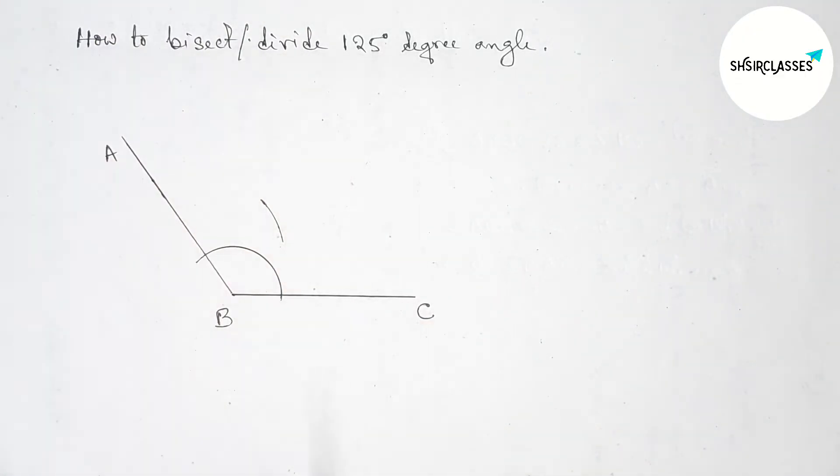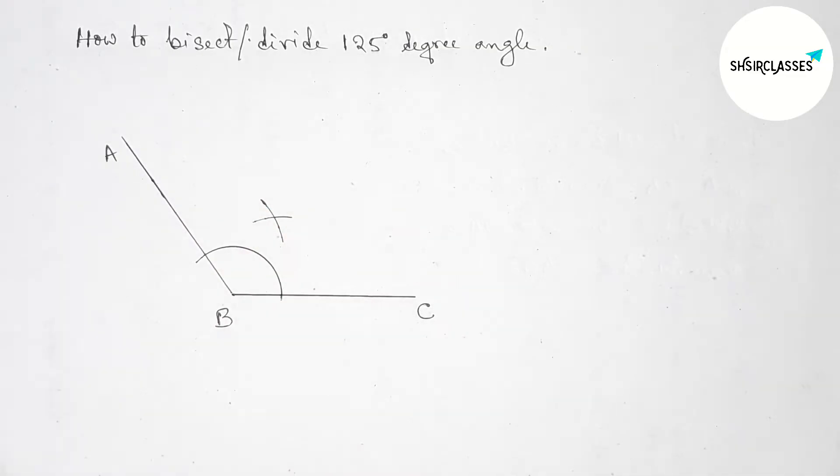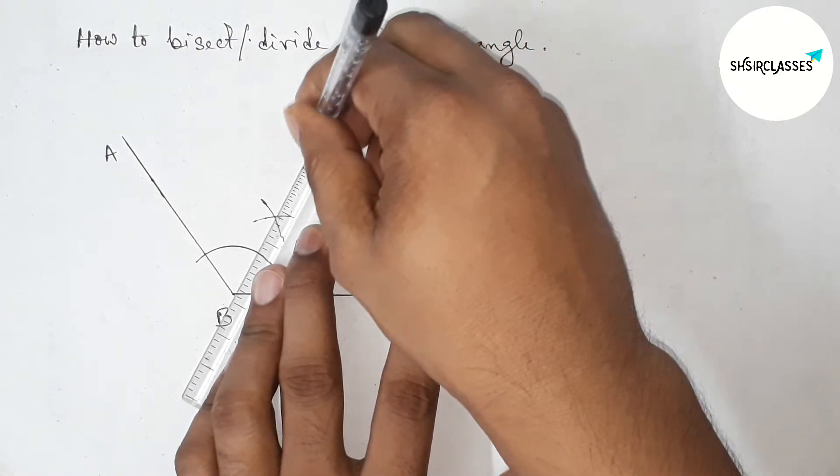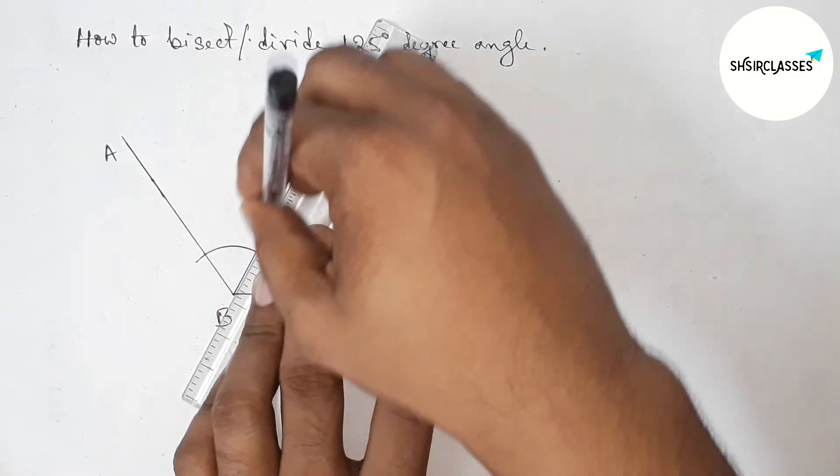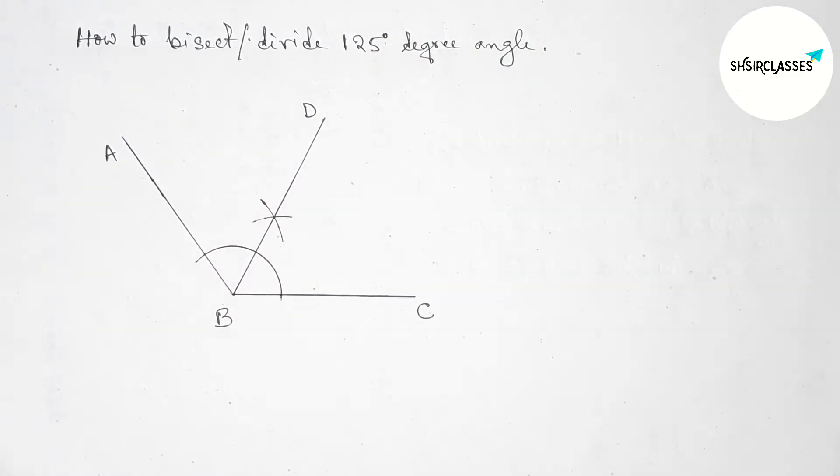and drawing an arc here. Again with the same length, putting the compass here and cutting here. Okay, so now joining this line which bisects the 125 degree angle. Now taking point D, and here angle ABD...